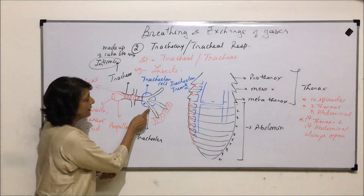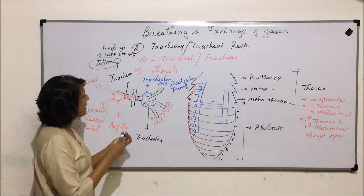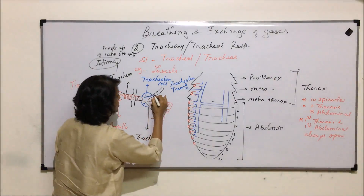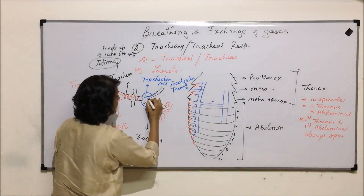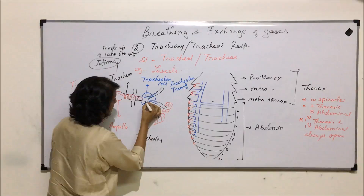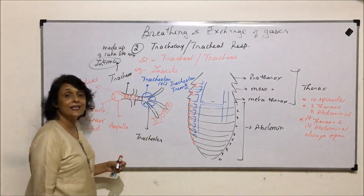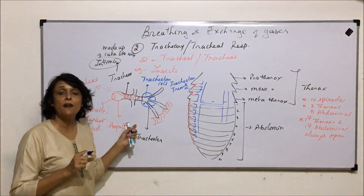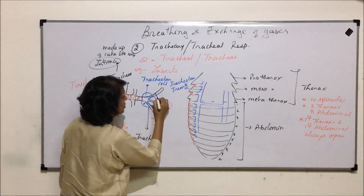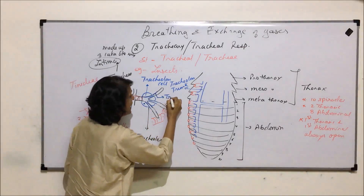Similarly, the tracheoles are also lined by a substance, but here the lining is more or less uniform — also to prevent collapsing. The material in tracheoles is called tracheal lining, and the thickening prevents collapse. The intima material forms spiral thickening called taenidia in trachea, while tracheoles have uniform lining.